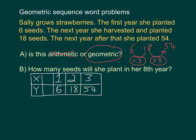In the first year she's going to have six seeds. In the second year, 18 seeds. And in the third year, 54 seeds.